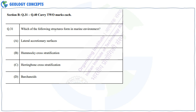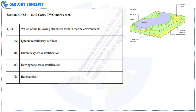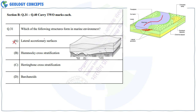Question 31: Which of the following structures form in a marine environment? The first option is lateral accretionary surface — these form in a fluvial environment, as you can see it is a meandering river, so this is wrong. Next is hummocky cross stratification, and these form in a storm weather environment. You can see the hummocks and swales in the structure, and they belong to a marine environment. This is also correct.